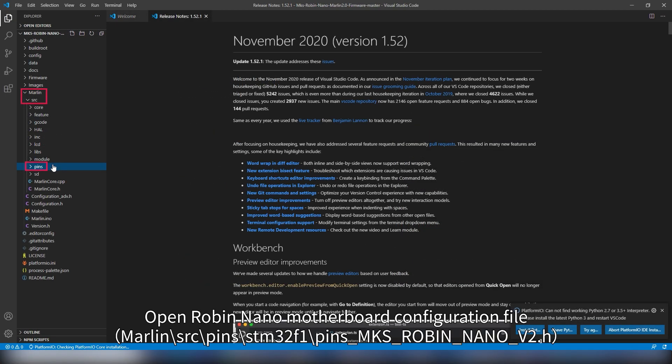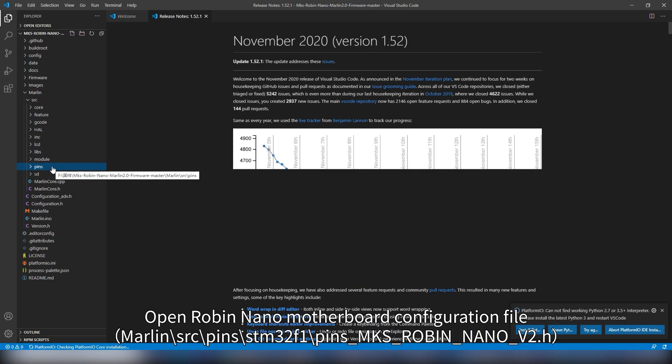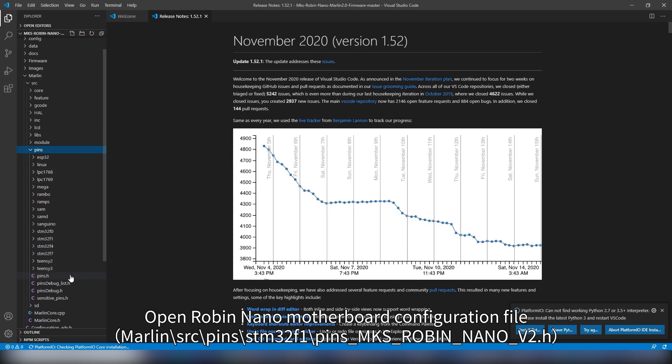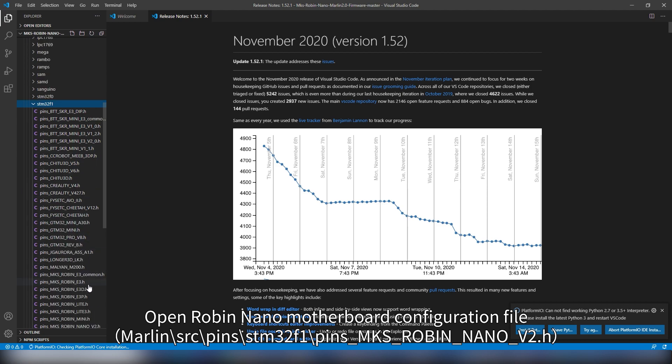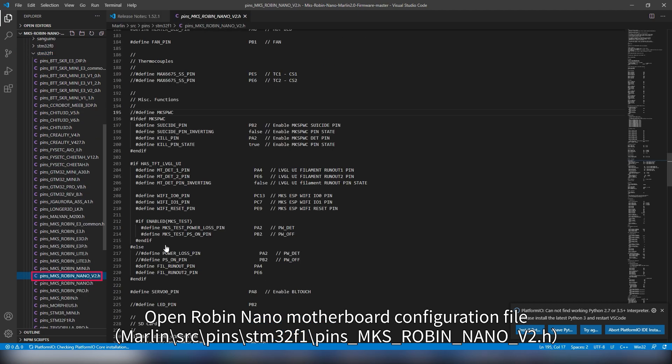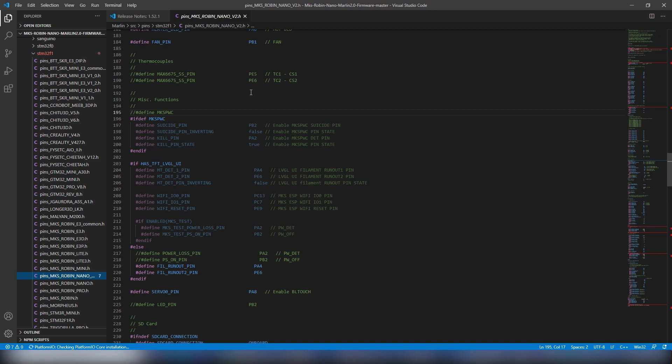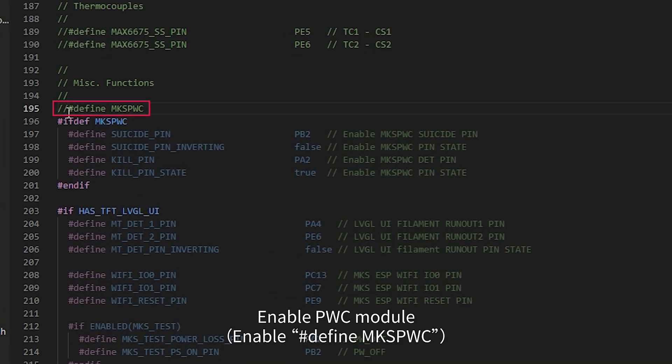Use Visual Studio Code to open the firmware folder. Open Robin Nano motherboard configuration file and enable PWC module.